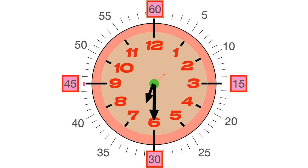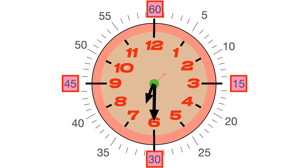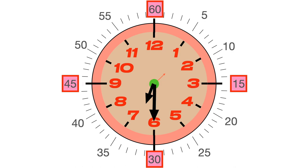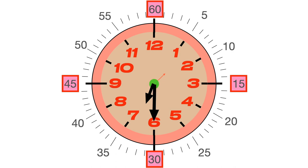An hour is divided into four quarters. A quarter means one of four equal parts, so one quarter is 15 minutes. The first quarter is 15 minutes, and the second quarter is 30 minutes because 15 plus 15 equals 30. The third quarter is 45 minutes because 15 plus 15 plus 15 equals 45.